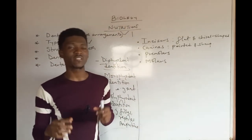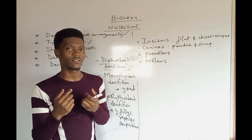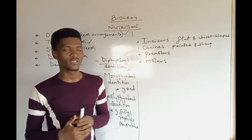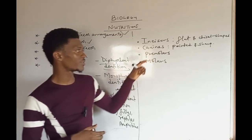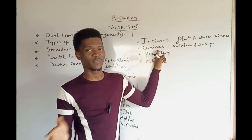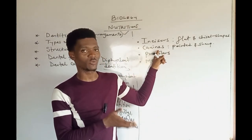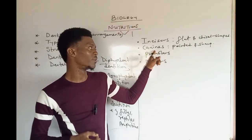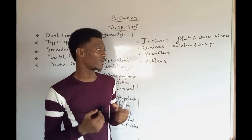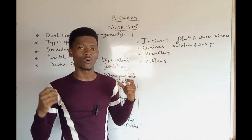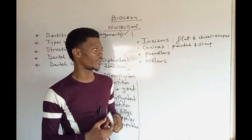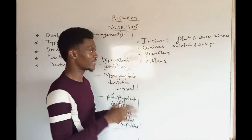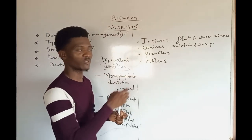Canines are basically used for tearing. Organisms that feed on other animals — carnivores — have well-developed canines. In fact, the name 'carnivore' is derived from their well-developed canines. They use these well-developed canines for attacking their prey and basically for tearing — that is the generalized function of the canines.